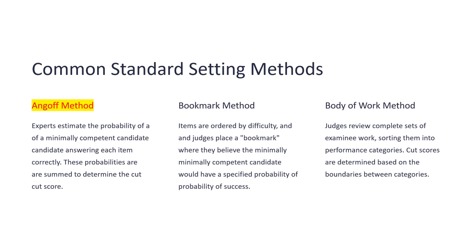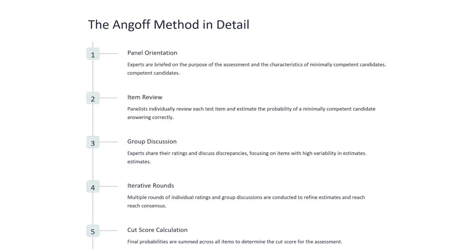The Body of Work method uses expert review panels to sort examinee work into various performance categories based on historical works, from which descriptive values are derived. Generative AI can help generate these descriptions — for example, if you have five sets of good answers you want to grade as an 'A', you can put them into generative AI and ask it to create the rubrics. That is, in a way, a form of standard setting.